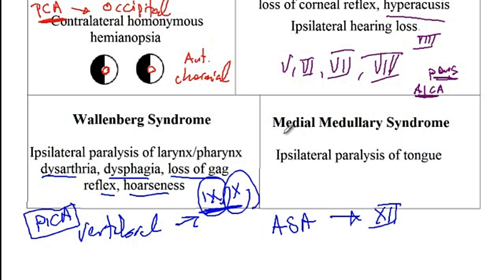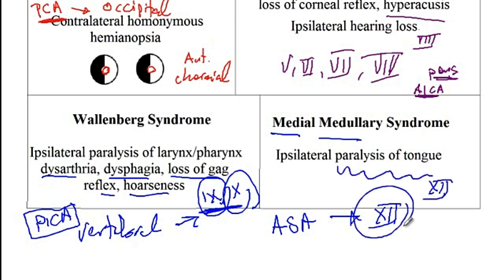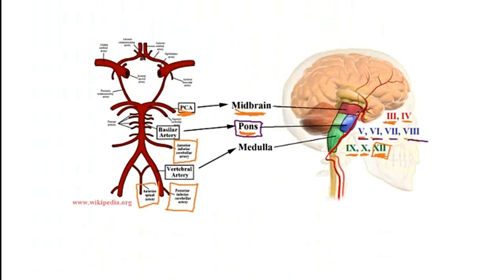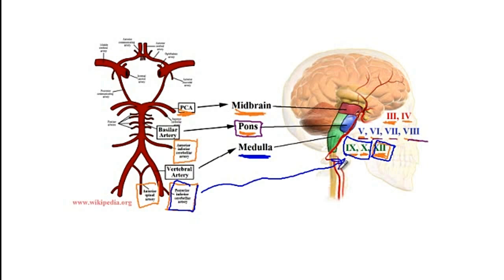With medial medullary syndrome, there is ipsilateral paralysis of the tongue, which is cranial nerve 12, and this is from a lesion of the anterior spinal artery. To summarize: the medulla contains cranial nerves 9, 10, and 12. Cranial nerves 9 and 10 are supplied by the PICA branch of the vertebral artery, while cranial nerve 12 is supplied by the anterior spinal artery.